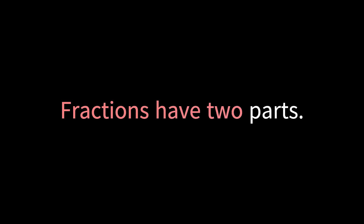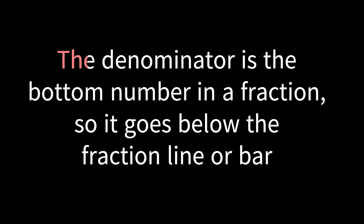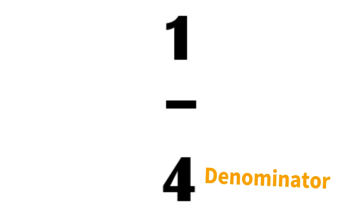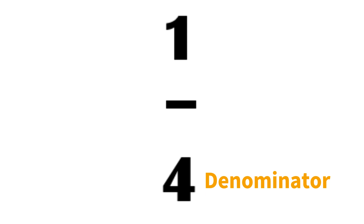There is a denominator, which is the bottom number of the fraction. That bottom number tells you how many parts your whole is divided into. So if you look at those examples we did earlier, you see that our circle was divided into four equal parts. The denominator, or the bottom number, represents our total number of parts. And it goes below the fraction line or the bar.